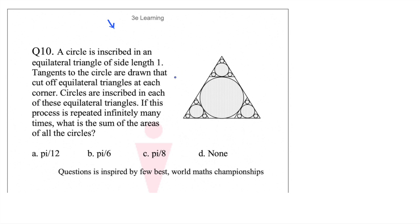I hope you have paused the video and solved the question. So it is nothing but a GP summation with infinite terms, a upon 1 minus r, where a is nothing but the area of the first circle, which is pi r square. If the side length is 1, then the r is nothing but 1 by root 3.